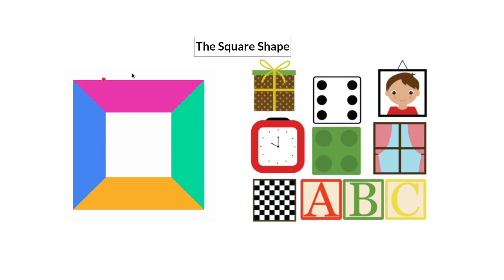So this is the square shape. It is not round like the circle. It has sides — four sides — and all the sides are the same.